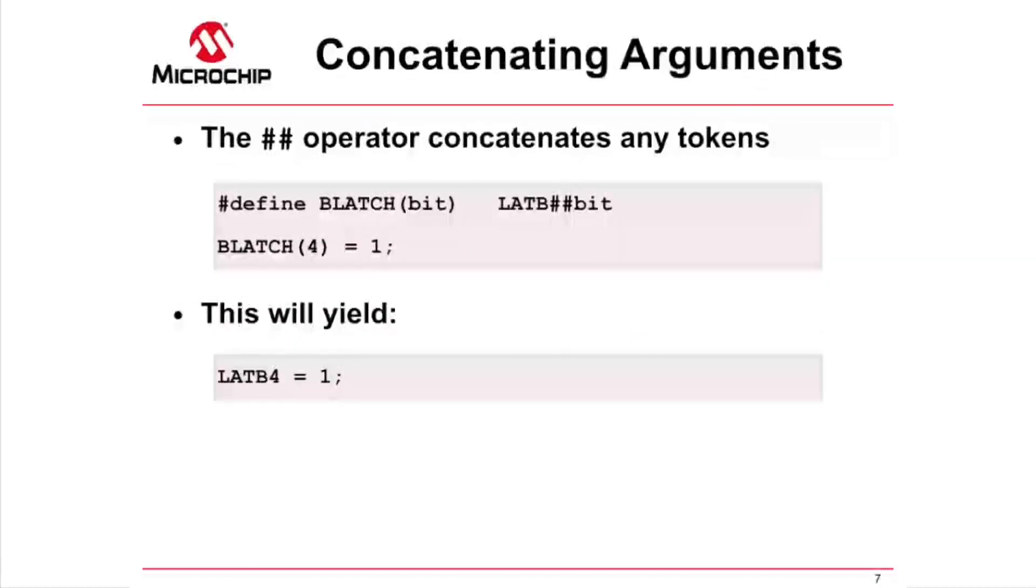The other macro operator is a double pound (##), which allows you to concatenate any tokens, not just strings. In the example shown in the top box, this operator is used to join the token LATB with the bit argument token. When invoked with the argument 4, it expands to the single token LATB4, which is the register bit variable that corresponds to bit 4 in LATB on some PIC devices.